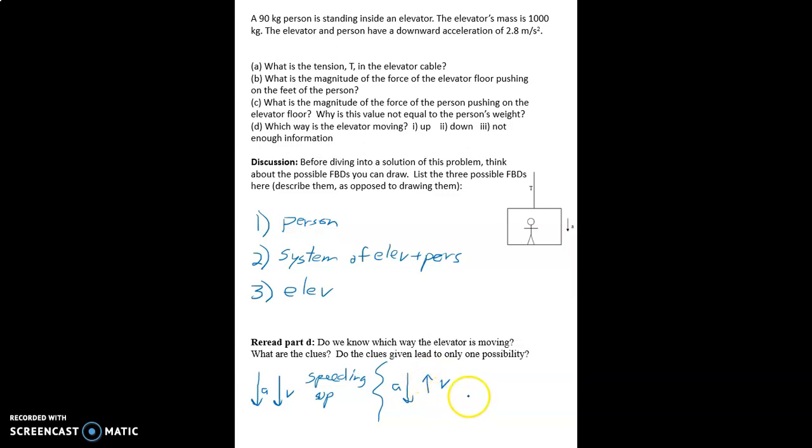The velocity and acceleration don't have to be in the same direction. In fact, every time something's slowing down, they're in opposite directions. So we look back at the problem statement. Does it say anywhere in the problem that the elevator is going downward? It does not.